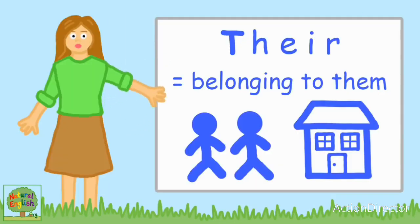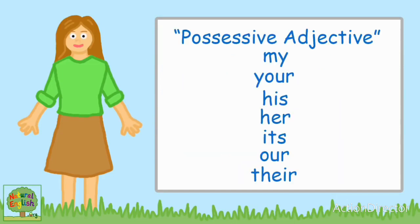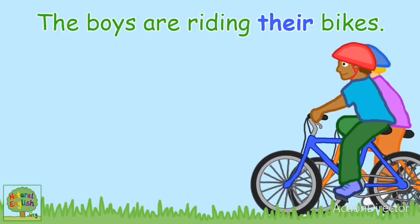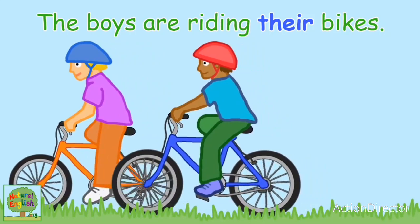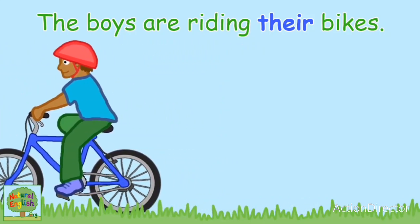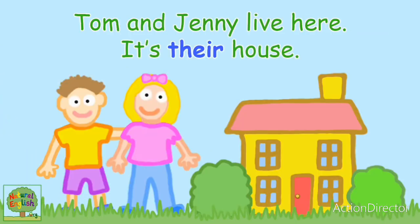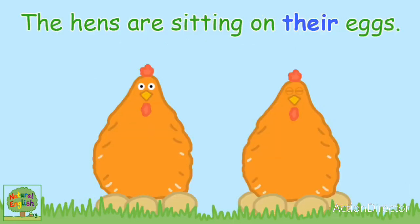Their, spelled T-H-E-I-R, means belonging to them. It's a possessive adjective from the group: my, your, his, her, its, our, their. The boys are riding their bikes. Tom and Jenny live here — it's their house. The hens are sitting on their eggs.